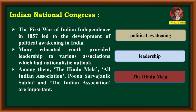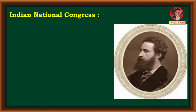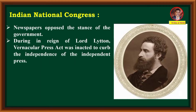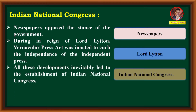Newspapers opposed the stance of the government. Many leaders started their own newspapers which opposed decisions of the government. During the period of Lord Lytton, the Vernacular Press Act was introduced. The main aim of this act was to curb the independence of the press — it tried to curb the freedom of Indians. All these developments finally led to the establishment of Indian National Congress.